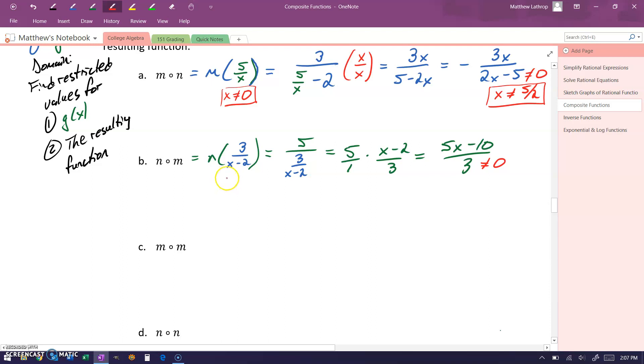So we only have a single domain restriction, which is that x cannot be equal to 2, since that would make that function m have a 0 in the denominator.